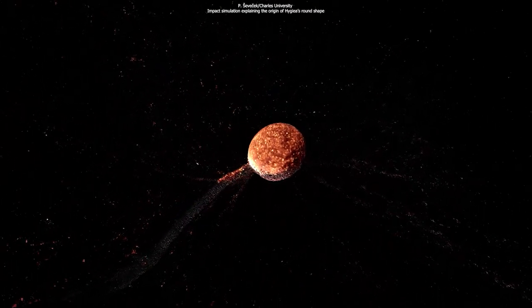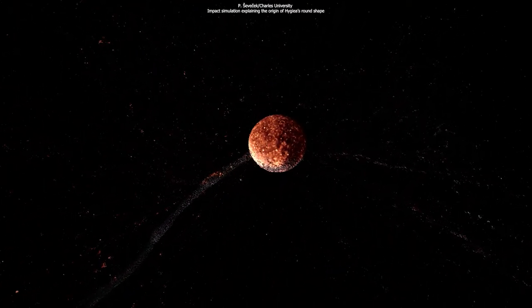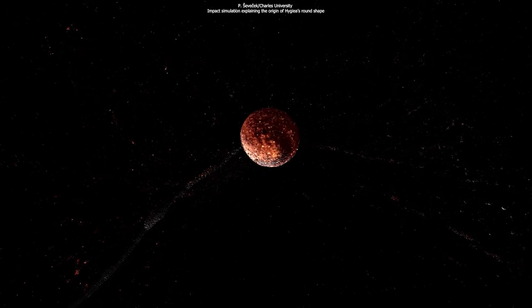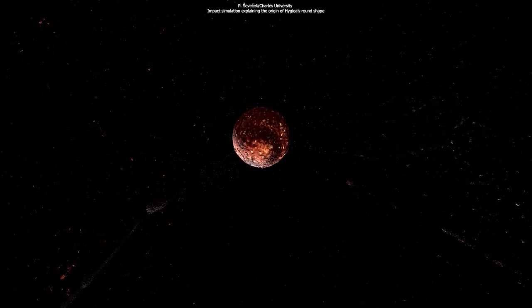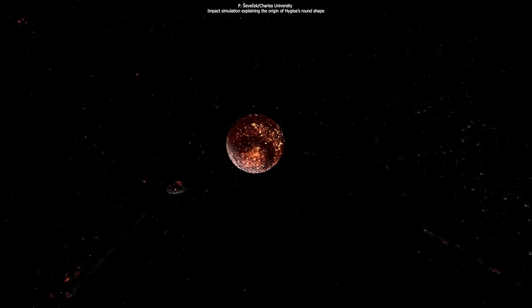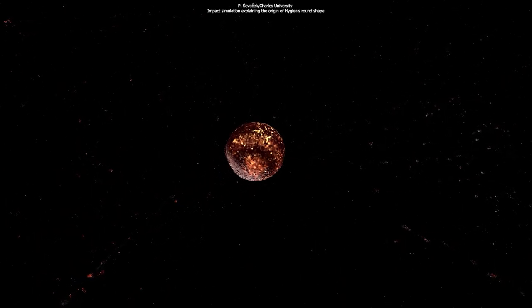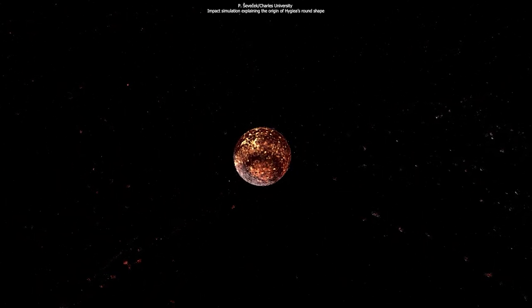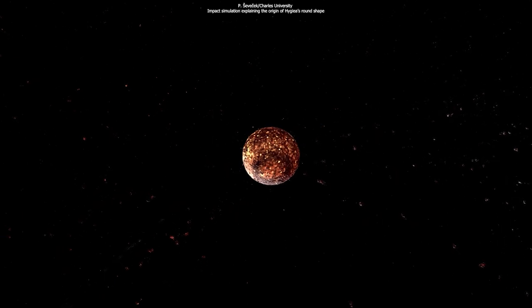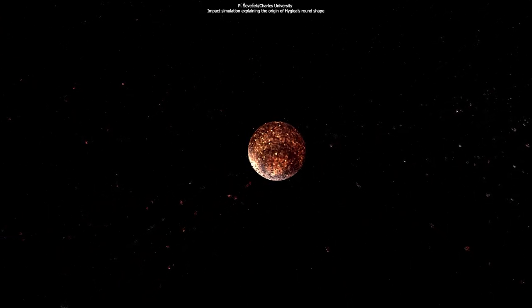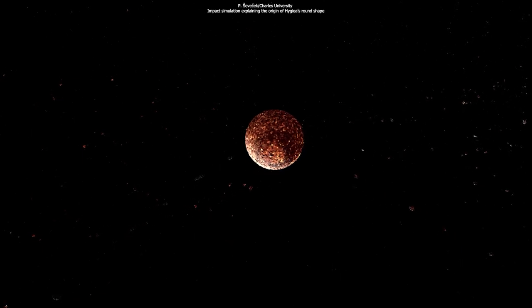However, smaller, rocky planets like Earth are thought to have formed differently through a variation of the core accretion process. In this case, the planetesimal continues to grow through collisions until it becomes large enough to have a strong enough gravity to attract gas. But instead of becoming a gas giant, it becomes a rocky planet with a small atmosphere.